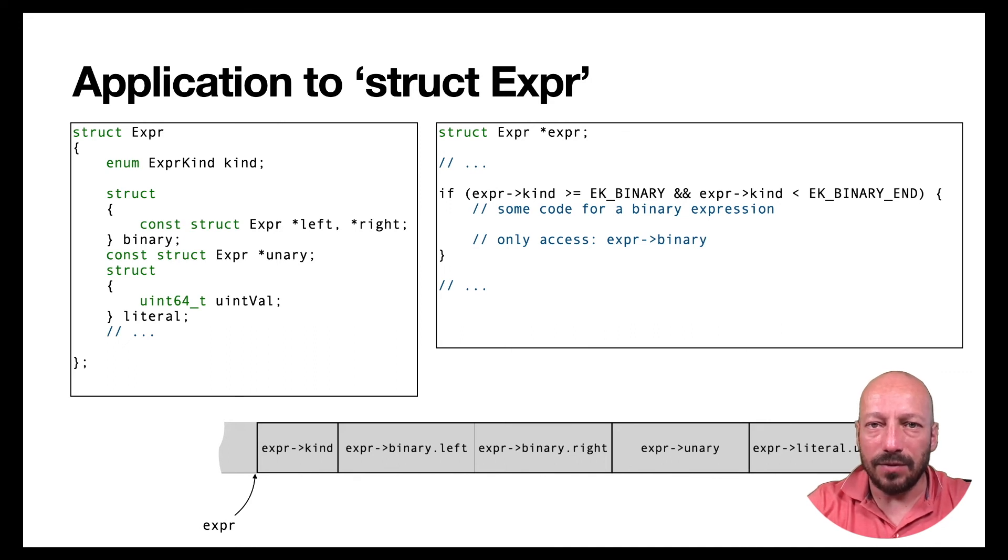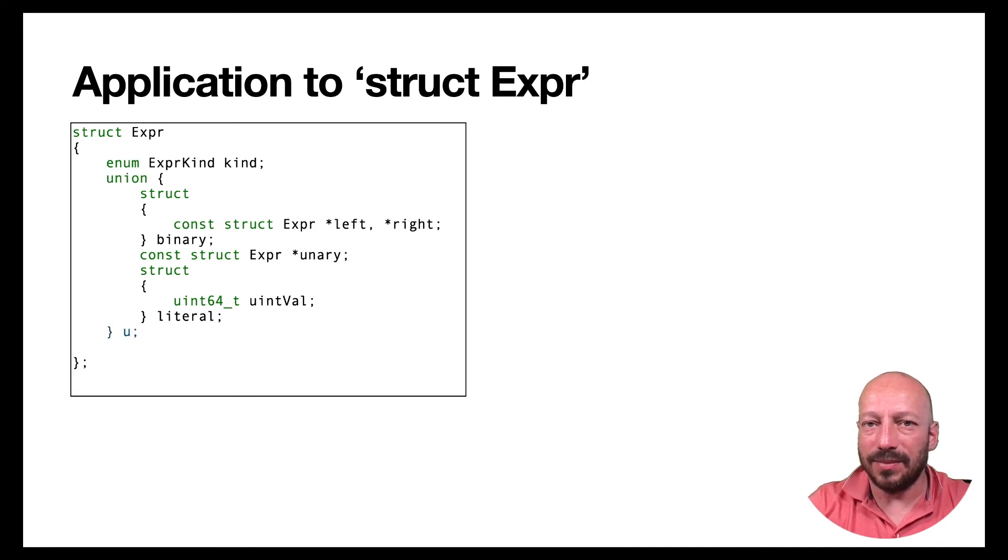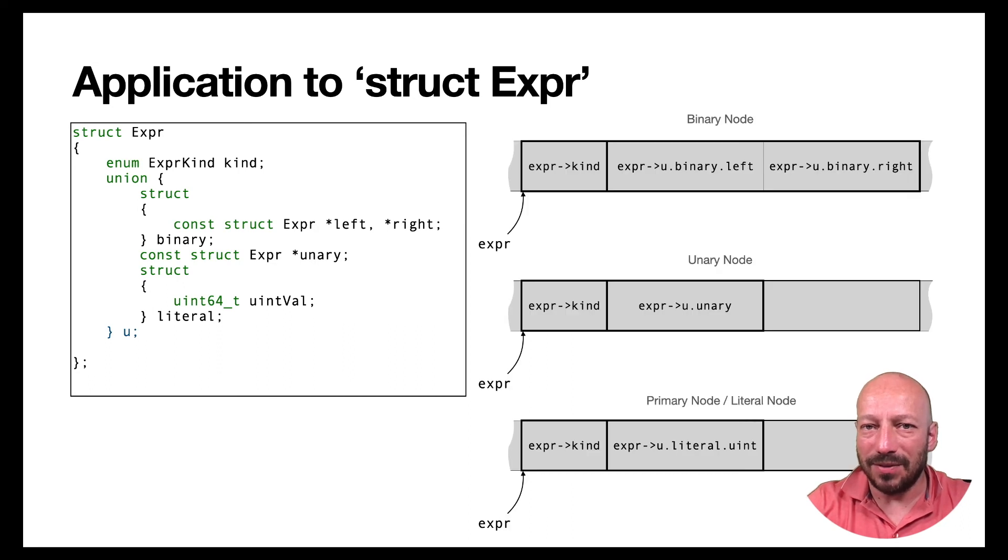And to optimize that, we simply can change the declaration of this struct into that so that we have a wrapper around these other three members so that they share the same memory or are overlapping. And that means if it's a binary node, then we just, as before, access this binary member. But it shares memory with these other members, which are not used in this case anyway.